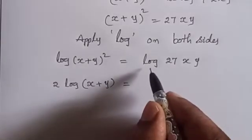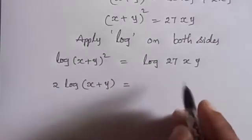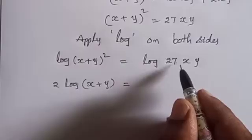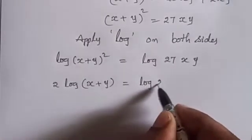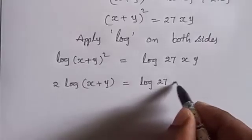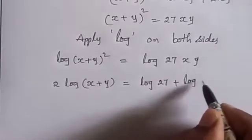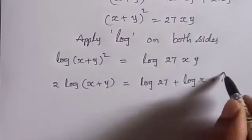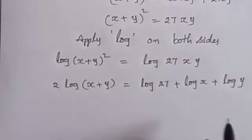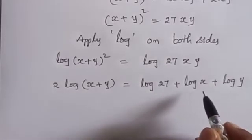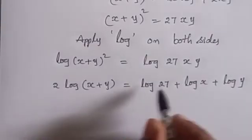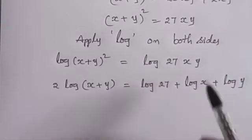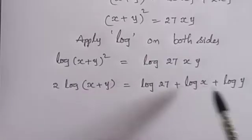2 log of x plus y is equal to log 27 plus log x plus log y. The formula here is log a times b equals log a plus log b. For a times b times c, it's log a plus log b plus log c.